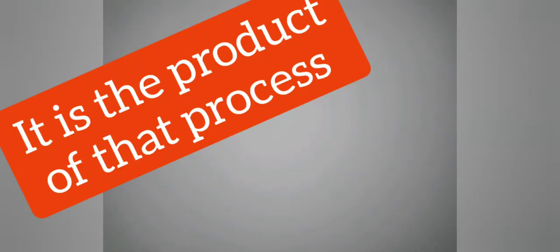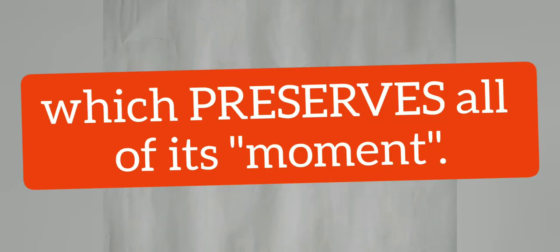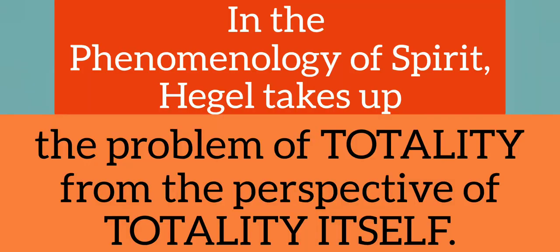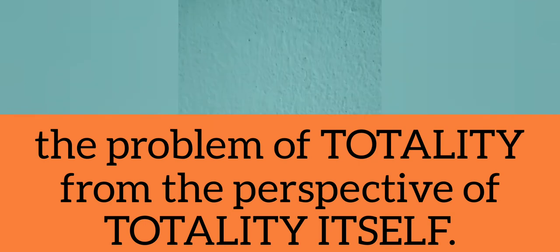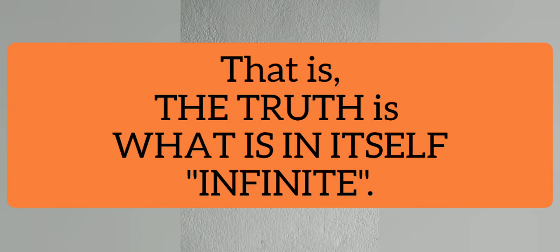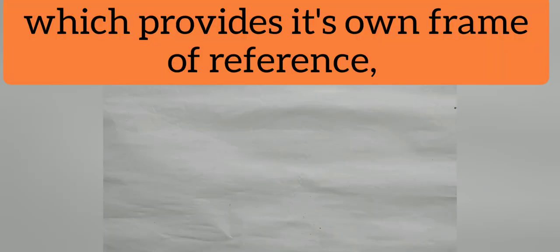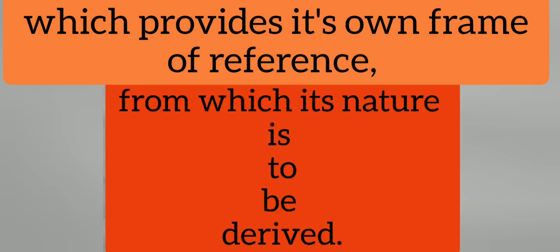By totality, Hegel means a totality which preserves within it each of the ideas or stages that it has overcome. It is the product of that process which preserves all of its moments. In the Phenomenology of Spirit, Hegel takes up the problem of totality from the perspective of totality itself. That is, the truth is what in itself is infinite — it is only everything. That is, the totality which is infinite, for it has no logical point outside itself, which provides its own frame of reference from which its nature is to be derived.